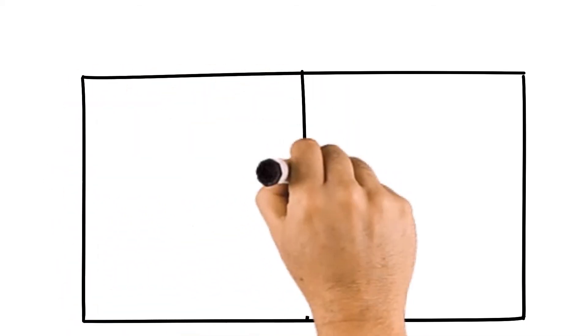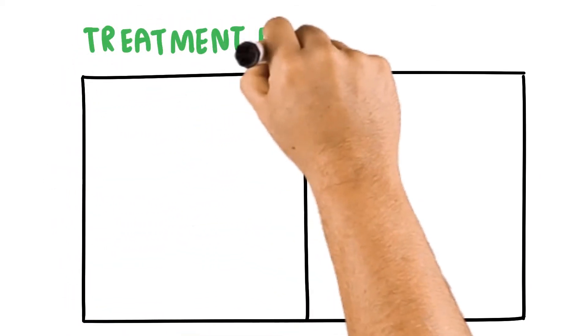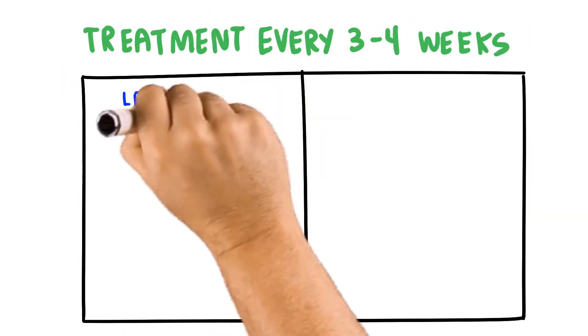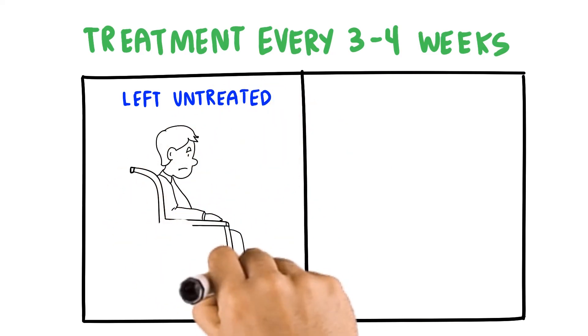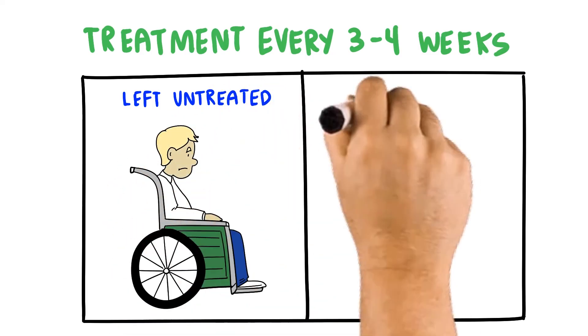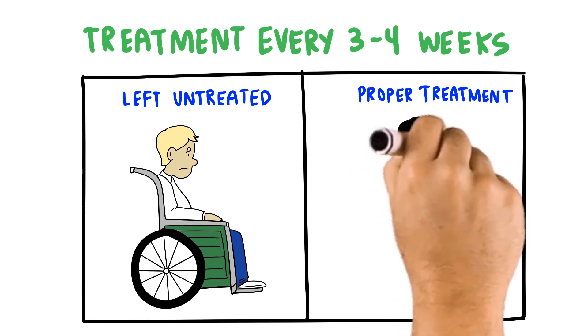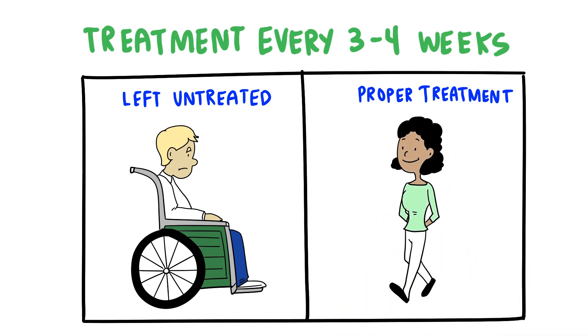CIDP is chronically progressive, and many patients must receive treatment every 3 to 4 weeks to maintain their health. Left untreated, 30% of patients progress to wheelchair dependence, but with proper treatment, 90% of patients can walk without aid.